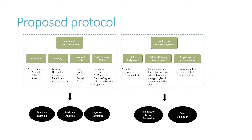Based on the techniques and signals, we want to propose a two-component money laundering detection framework. The single-bank detection system is mainly in charge of the money laundering risk assessment with the known data or limited sharing of information for cross-bank transactions. It relies mostly on the indicators constructed in the previous section using homomorphic encryption and tabulation.